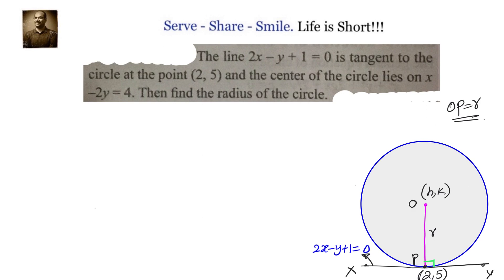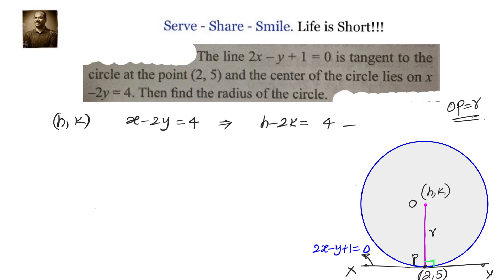Our first step: we know that h comma k is a point on the line x minus 2y equals 4. That gives us h minus 2k equals 4. This is our equation number 1.